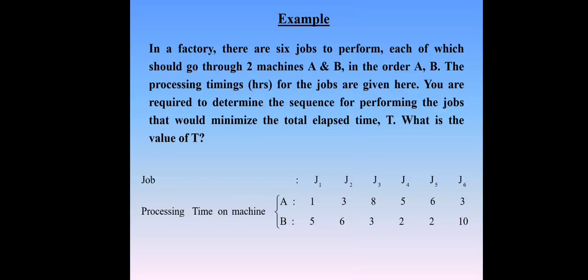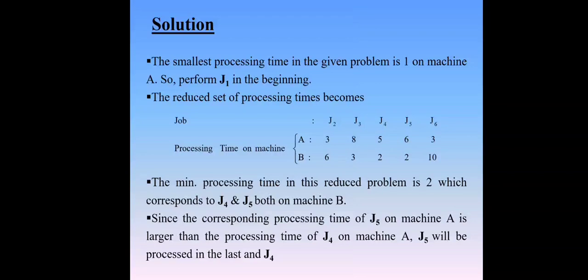What is the value for T? Here we have the six jobs J1, J2, J3, J4, J5, and J6. We have two machines, capital A and capital B, with corresponding processing times. Now we find the smallest element in the processing time. The smallest processing time in the given problem is 1, on machine capital A. So perform J1 in the beginning.